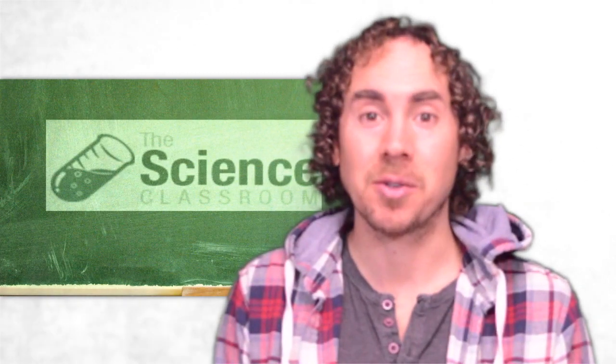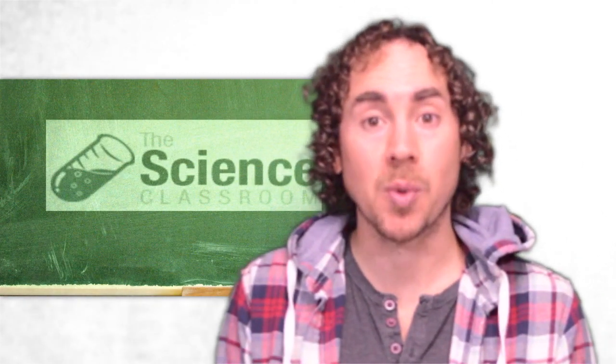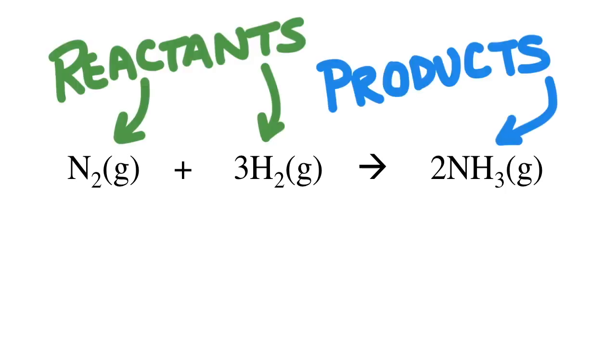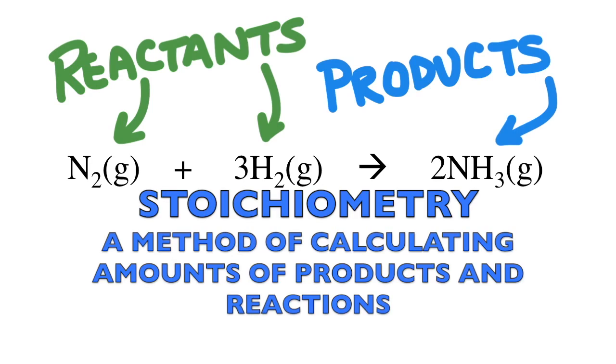Hi, I'm Josh, and this is the Science Classroom. In this video, we're going to learn about stoichiometry. Chemists use balanced chemical equations, like this one, to predict the products and reactants in a chemical reaction. Stoichiometry is a method of calculating the amounts of products and reactants based on those equations.